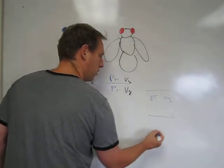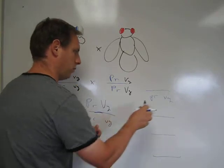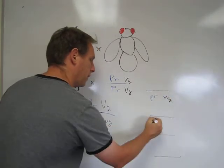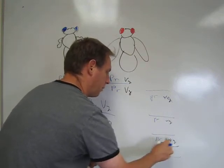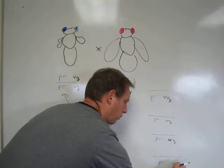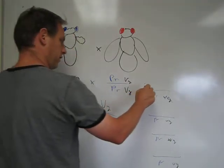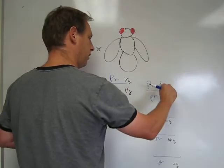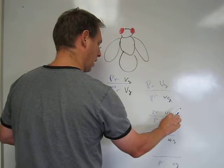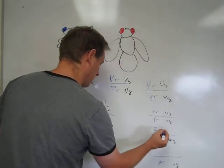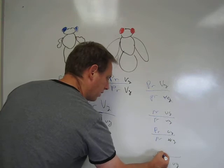There are four different possible gametes that this individual can produce, and under independent segregation each of those gametes is equally likely. I'm going to show the four possible gametes united with the known gamete from the backcross parent. Under independent segregation, each combination — plus/plus, recessive/recessive, plus/vestigial, and purple/plus — would be as equally as common.